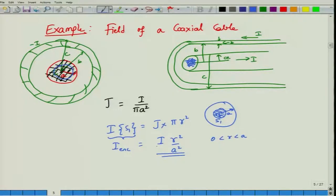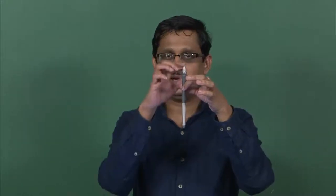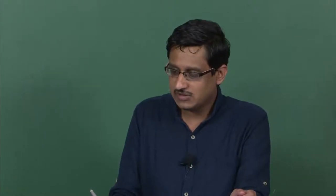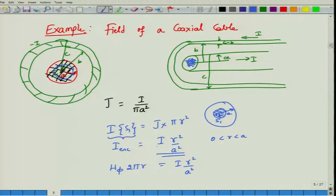For the left-hand side of Ampere's law, the magnetic field circulates around the wire and is along the phi direction. On the circular path at radial distance R, H is constant and the line integral gives 2 pi R times H_phi. Setting this equal to I R squared divided by A squared, R cancels and H_phi equals I divided by 2 pi A squared times R.